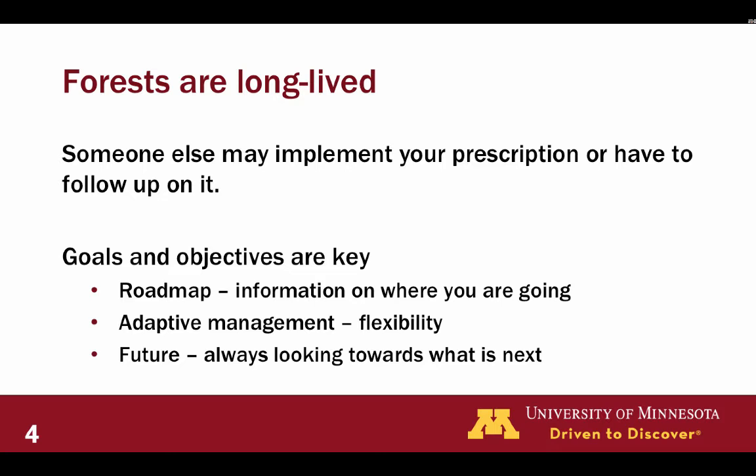What we need to really focus in on are goals and objectives — they are really key. Goals and objectives provide a roadmap; this is where we are going. They provide the ability to think about adaptive management and flexibility. We can't predict what is going to happen in the future, so we need that flexibility — and that's not even thinking about climate change, which is a whole other issue when we talk about adaptive management. In silviculture, we account for the past, we look at the current, but we're always looking towards that future, especially when we think about desired future conditions.